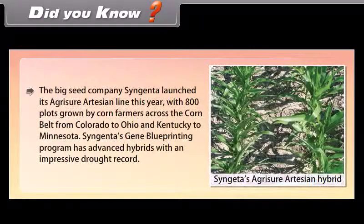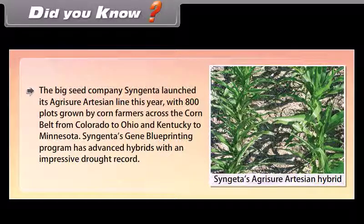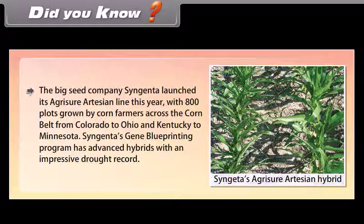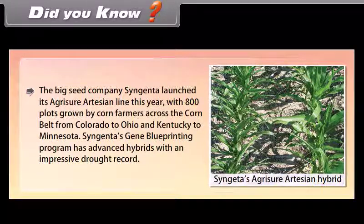Did you know? The big seed company Syngenta launched its Agritio artesian line with 800 plots grown by corn farmers across the corn belt from Colorado to Ohio and Kentucky to Minnesota. Syngenta's gene blueprinting program has advanced hybrids with an impressive drought record.